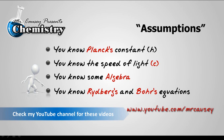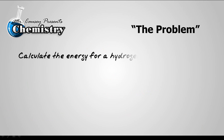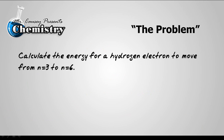And if you're not sure about any of this, be sure to go to my YouTube channel and check out videos on these subjects. Let's look at the problem: calculate the energy for a hydrogen electron to move from n equals 3 to n equals 6.